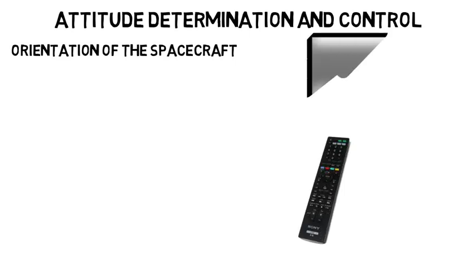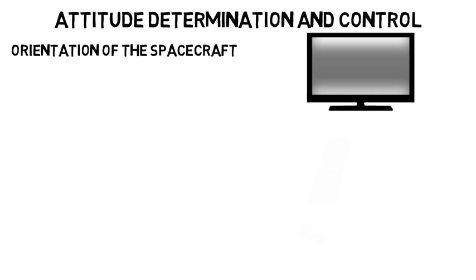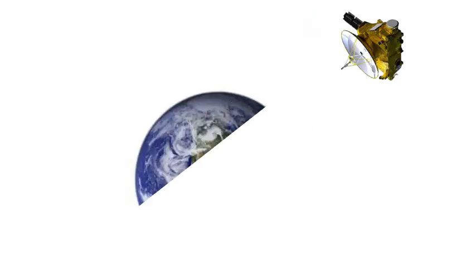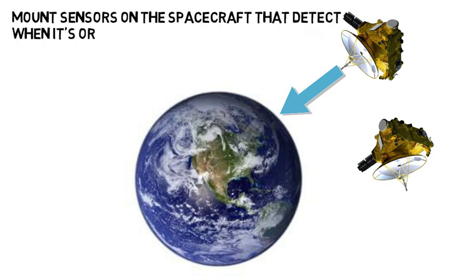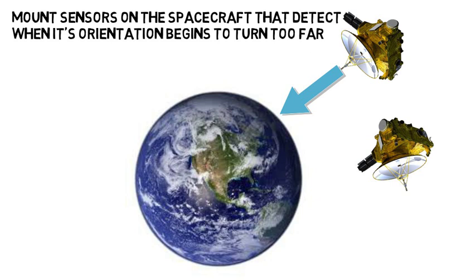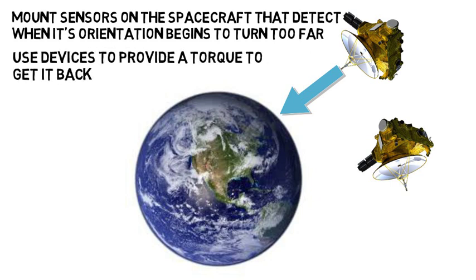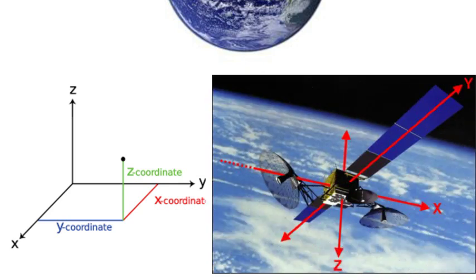Attitude determination and control is all about controlling the orientation of the spacecraft. Think about the fact that you have to aim a remote control at or near a TV to turn it on — if you orient it a different way, it won't work. The same thing goes for a spacecraft orbiting Earth: it may have an antenna that has to point at something on Earth to communicate with us. If along its orbit it turns too far, the antenna may not be able to communicate. We can mount sensors on the spacecraft that detect when its orientation begins to turn too far, then use devices to provide a torque to get it back to the required orientation. In classes, this involves a lot of looking at coordinate systems and different axes to determine how a spacecraft is oriented mathematically.